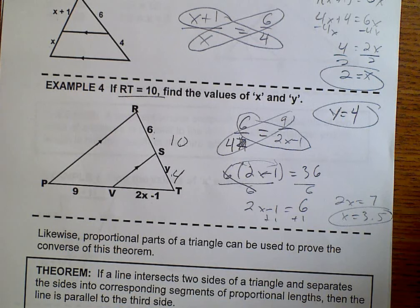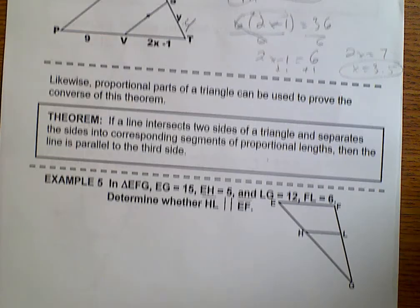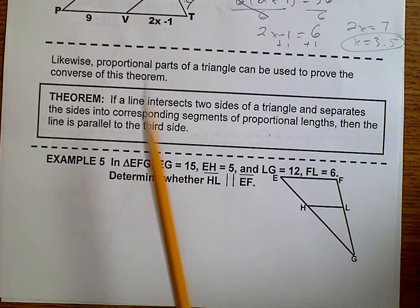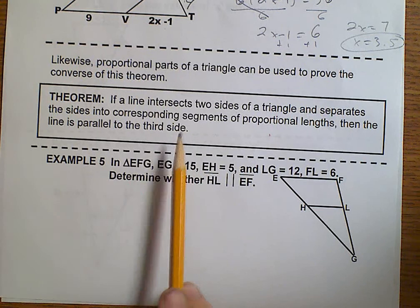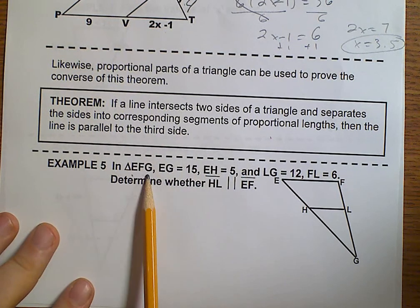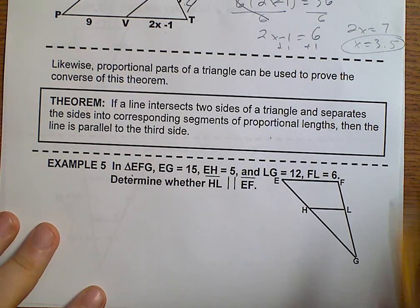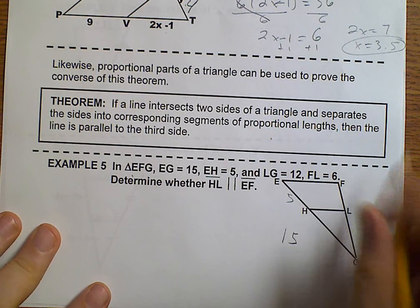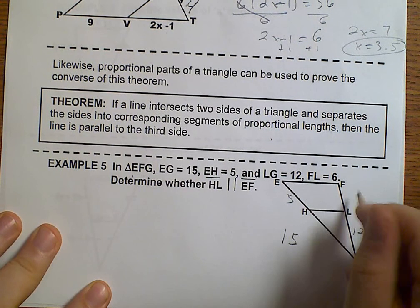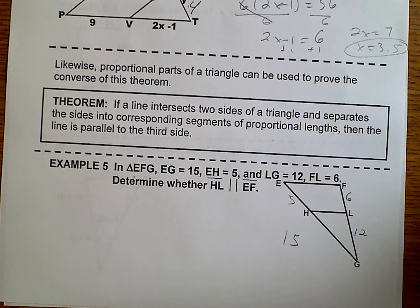Let's go ahead and look at our next theorem. Proportional parts of the triangle can be used to prove the converse of this theorem. So if a line intersects two sides of a triangle and separates the sides into corresponding segments of proportional lengths, then the line is parallel. What we're saying is that in triangle EFG, EG is 15, EH is 5, LG is 12, and FL is 6. We want to determine if these are in fact parallel.